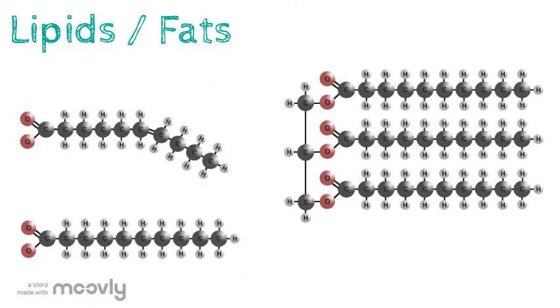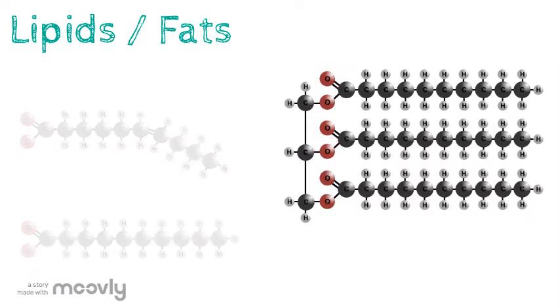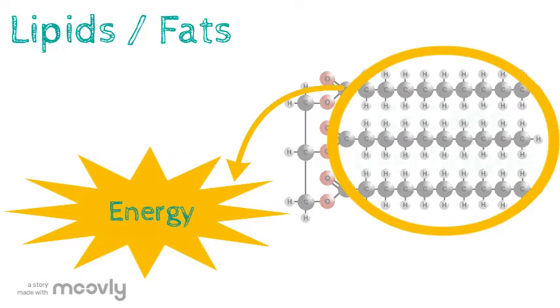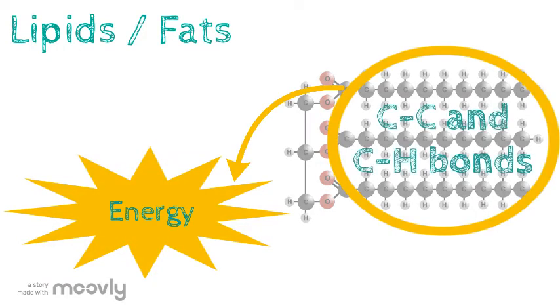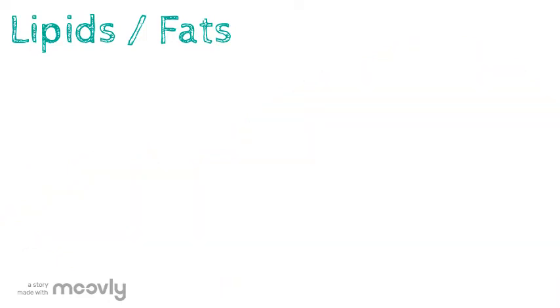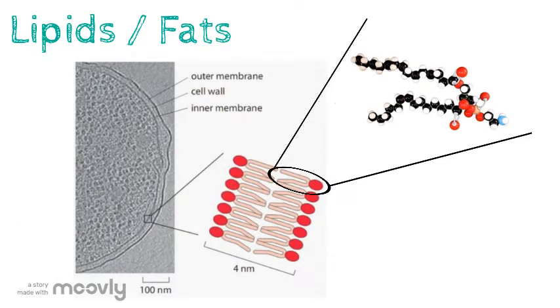Like carbohydrates, lipids are made of carbon, hydrogen, and oxygen atoms. Lipids, commonly known as fats, are used by cells to store energy, as these molecules have lots of carbon-carbon and carbon-hydrogen bonds. Lipids are also incredibly important molecules, as they are the primary molecule in the cell membrane.